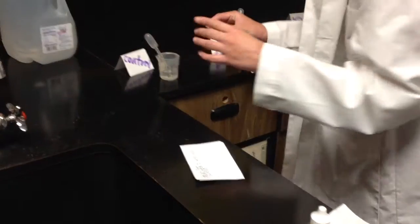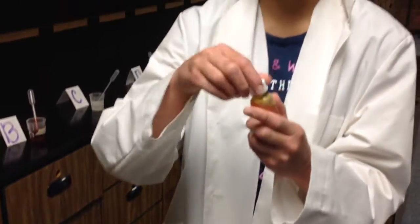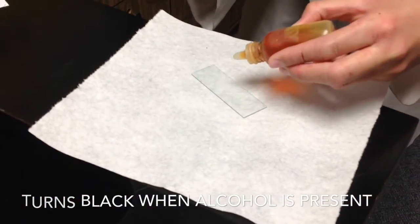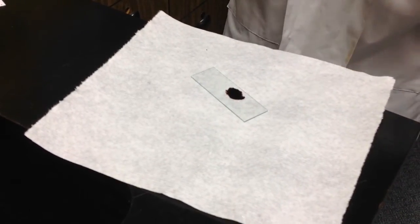After you put one drop on the slide, you add the reagent that tests for the presence of alcohol. If there's alcohol in it, it will turn black. Just put one drop of the reagent in there, and it will turn black because there is alcohol in the control.